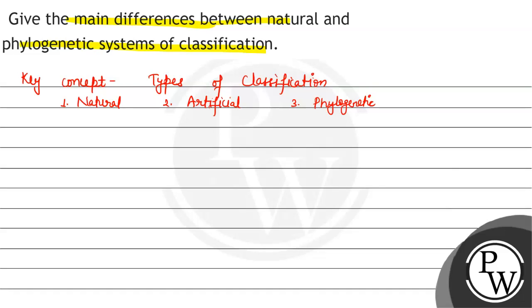Let's talk about artificial classification. Simply, there were only few characters that were under consideration. The classification was based on morphology — that is, the external appearance of characters.